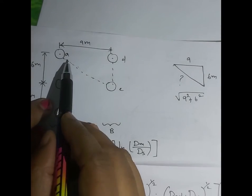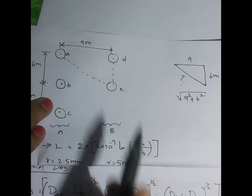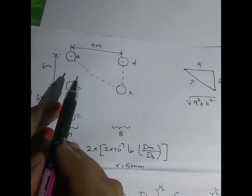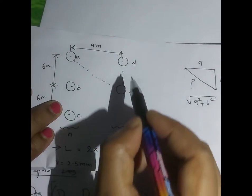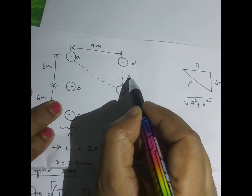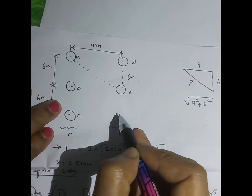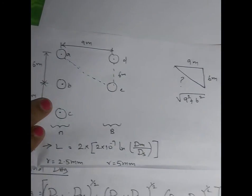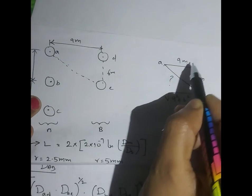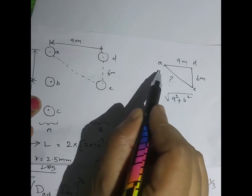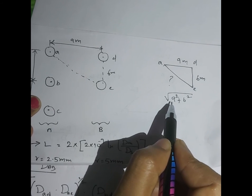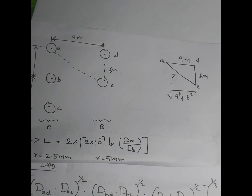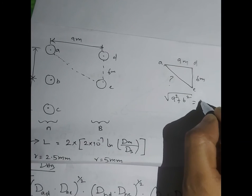Now writing the distances: Dad (A to D) = 9 m, as given in the problem. For Dae, the distance is not directly given, but we know 6 m and 6 m sides, so we can make a triangle. Using Pythagoras theorem: √(9² + 6²) = 10.8 m. So Dae = 10.8 m.